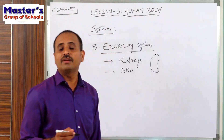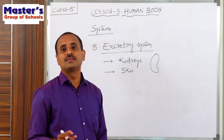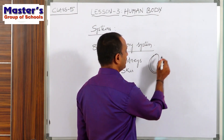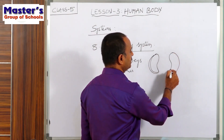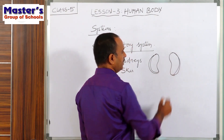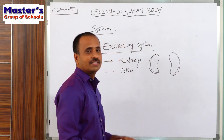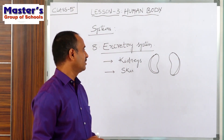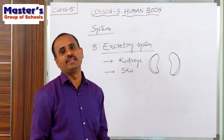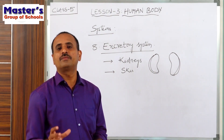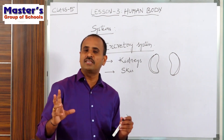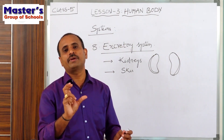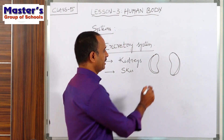Do you ever eat the vegetable beans? The beans have some seeds which look like this shape - kidneys are also in the shape of beans. How many kidneys are there in our body? There will be a pair of kidneys - that means two kidneys will be present in our body, at our back side on each side of the spine.